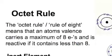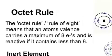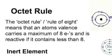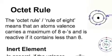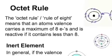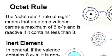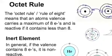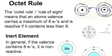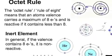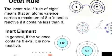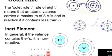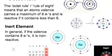That brings us to the octet rule. And the octet rule also means the rule of eight. And that means that an atom's valence carries a maximum of eight electrons and is reactive if it carries less than eight. And this is true for most atoms, not the very early numbers. But this octet rule is quite helpful to understand the reactivity of an atom.